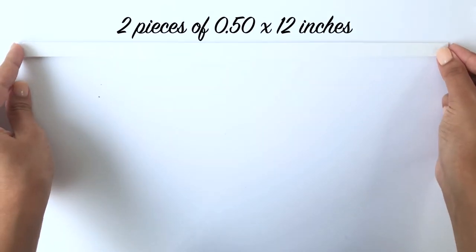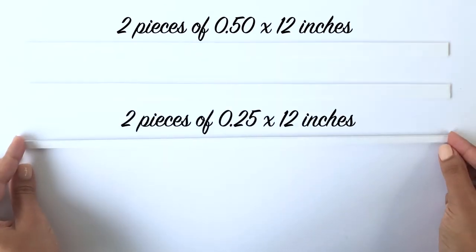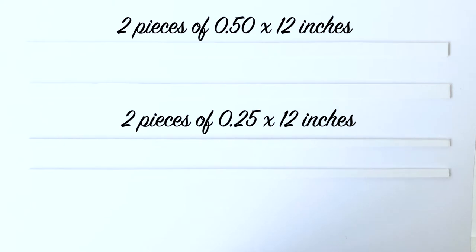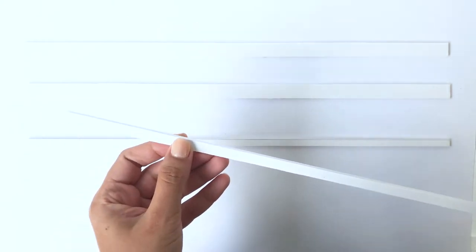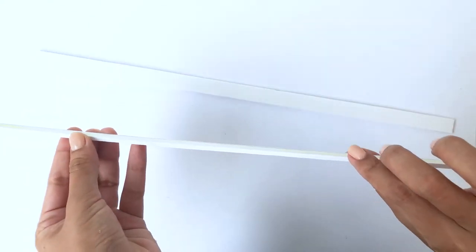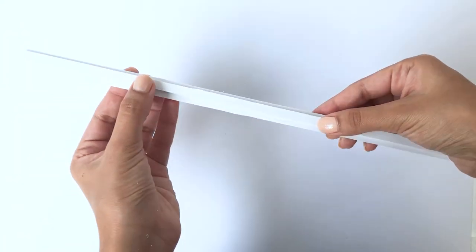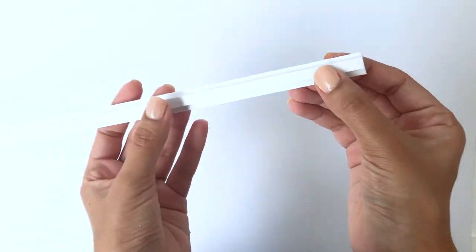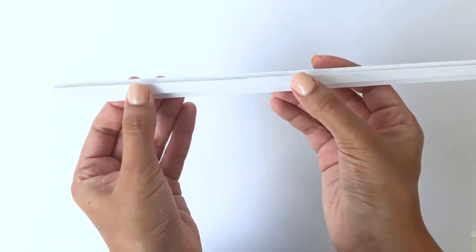Cut 4 thin strips of the sunboard in the given dimensions. Apply some glue on the thinner strip and stick it right in the middle of the thicker one. Once you've stuck the first one together, do the same for the second one as well.